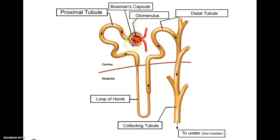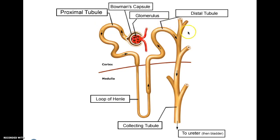You have the proximal tubule — proximal means close, so it's the tubule closest to the glomerulus. This is called the loop of Henle, or the nephron loop — it literally has a loop shape. Urine passes through all of this. You have the distal tubule, which is the tube furthest from the glomerulus. Then you have the collecting tubule, where urine collects after all the filtration and reabsorption have occurred. It then carries to the ureter.